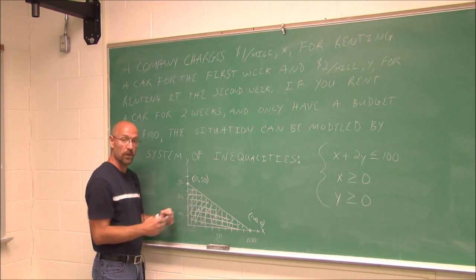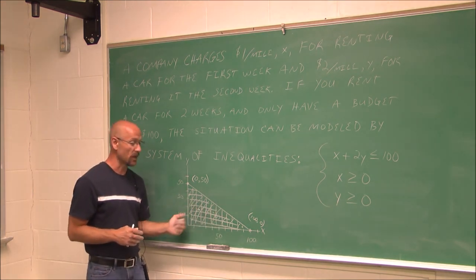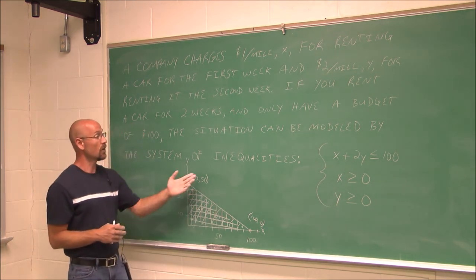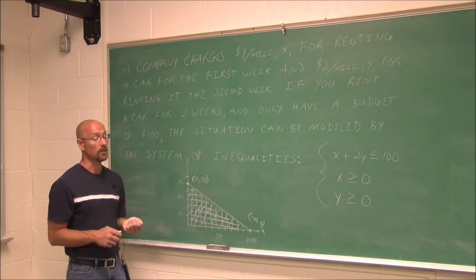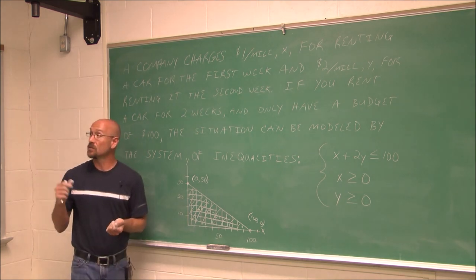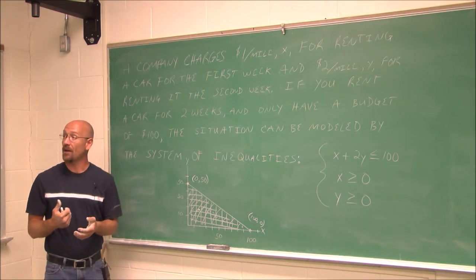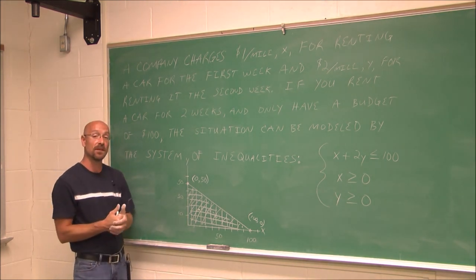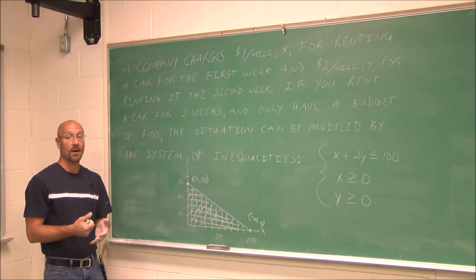We can see what ranges are available within the first and second week according to our budget of $100. This has been Section 3.7, Graphing Systems of Inequalities. Thank you for watching.